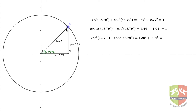A trigonometric identity is an equation that holds for any value of the angle — the variable in this case is the angle. This session was to demonstrate the three identities, showing that they indeed do not depend on any value of the angle. Thank you.